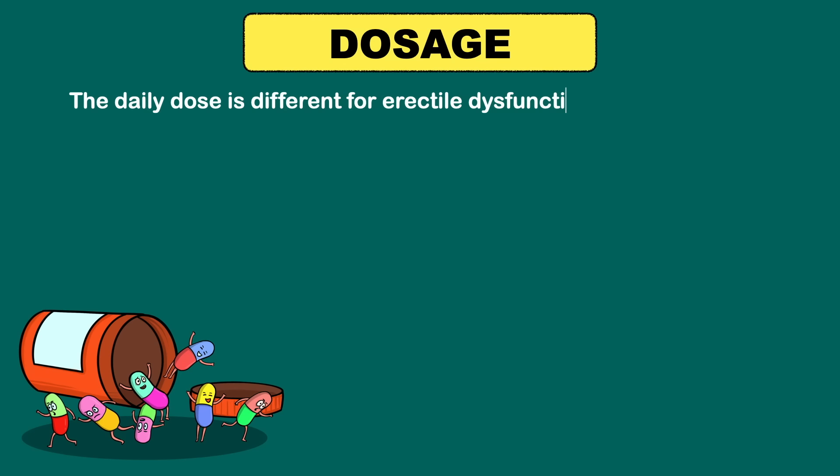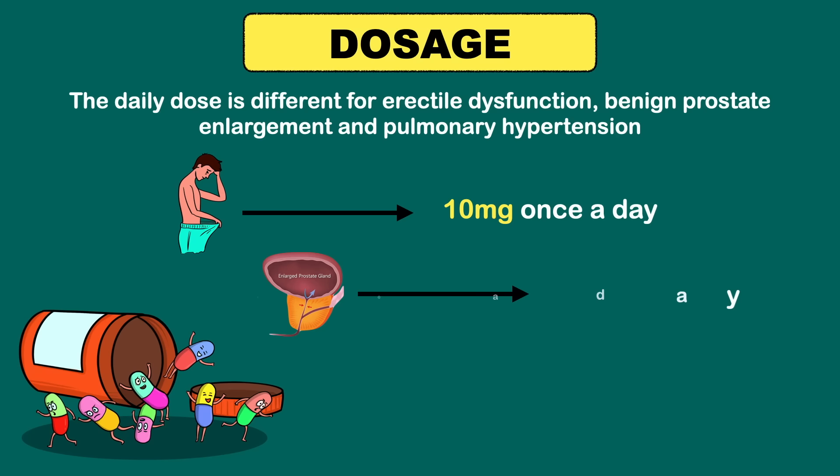Now let's talk about the dosing. The daily dose is different for erectile dysfunction, benign prostatic enlargement and pulmonary hypertension. The usual dose for ED is 10 mg once a day. But never take 2 tablets at a time. The usual dose for prostate enlargement is 5 mg once a day and for pulmonary hypertension it is 40 mg.